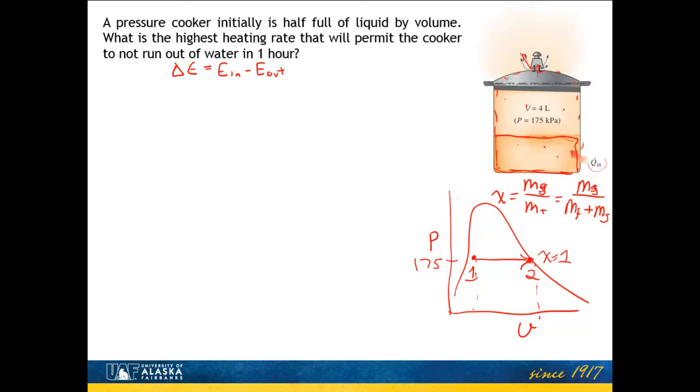For this open unsteady system, the correct form is M2U2 minus M1U1, the change in energy. The energy going in is Q in. The energy going out is material leaving, M E for exit, quantified with enthalpy since it crosses the boundary. I use internal energy for material inside the boundary and enthalpy for material that leaves. So I need to determine all these thermodynamic properties and masses using my understanding of the process.